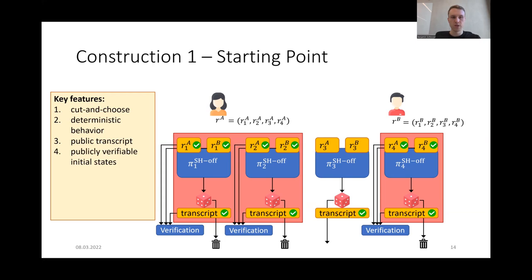As a fourth feature, we require that for all opened instances, the parties obtain a publicly verifiable initial state. This can be achieved by first sending signed commitments at the beginning, and then in the opening phase of cut-and-choose, the parties get to know decommitment values for the other parties' inputs. All of these key features are already provided by known input-independent PVC protocols. In particular, there exist generic compilers from semi-honest security to PVC security which also provide these features.